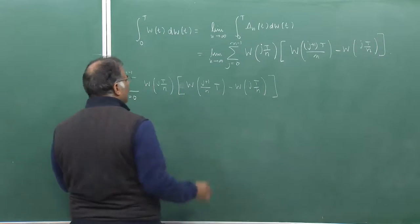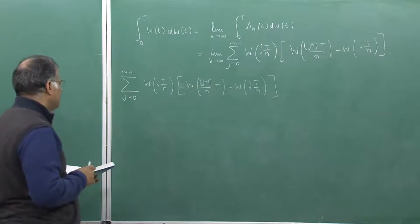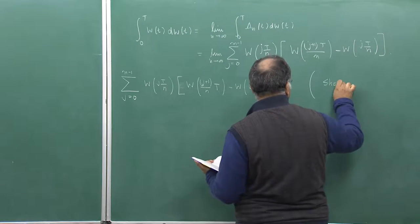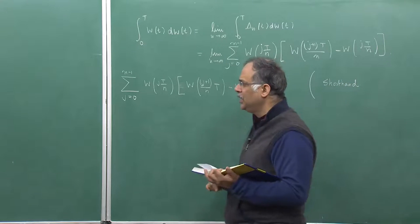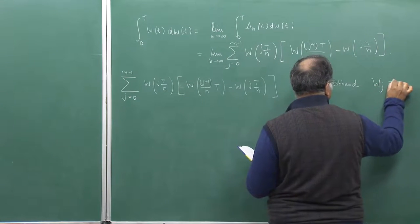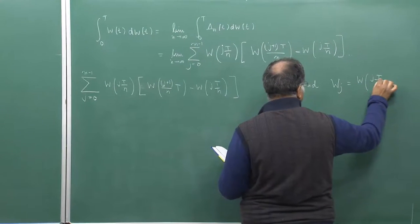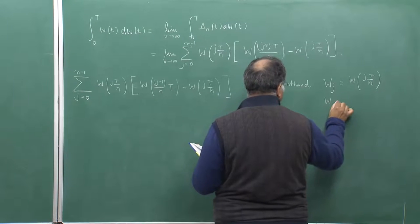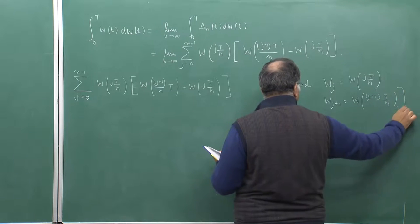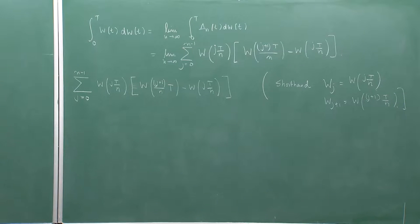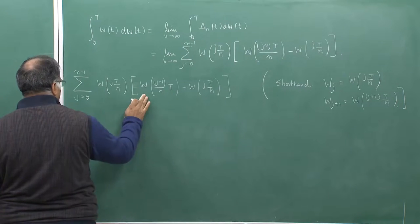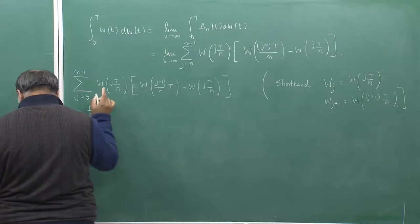Because there are so many clumsy terms, we will use shorthand notations. Let W_j stand for W(j·T/n), which means W_{j+1} stands for W((j+1)·T/n). With this shorthand notation, we will start the computation. Let me do the calculation — let me start by doing the following calculation.